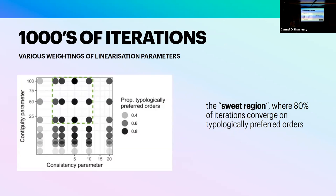You need both principles in the model to get natural language-like orderings. If you don't have the contiguity parameter, or it's too weak, you get typologically atypical orderings appearing too often. And if you don't have the consistency parameter, too much of the time it won't converge either — though you also can't have too much of the consistency parameter. There's what I call a 'sweet region' where both parameters are in force and you don't have too much of the consistency parameter, and then you end up with word orders similar to what we find in natural languages.